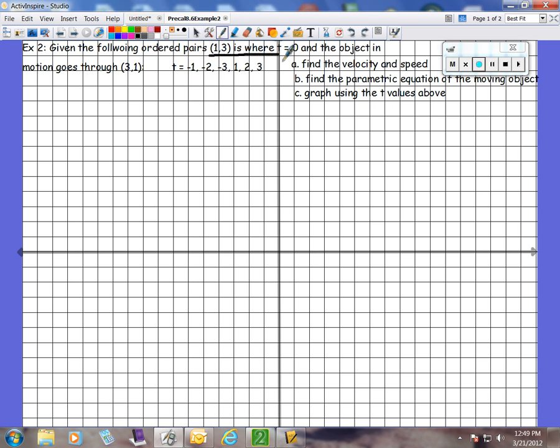(1,3) is where t is 0. You remember how that is the initial point, where the vector starts? Remember that? Let's just write our vector equation, because we're going to use it to answer our questions.